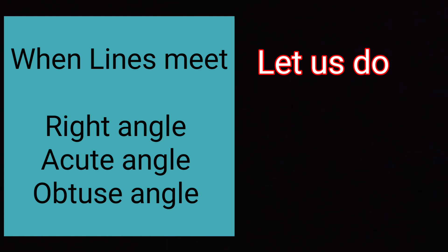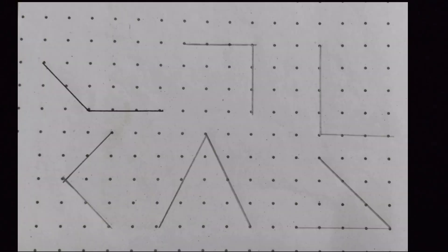Then, you have the dot grid again. And on the dot grid, you need to draw the angles. Like you can draw acute angle, obtuse angle, right angle. And if the angle is given to you, you should be able to identify the angles.